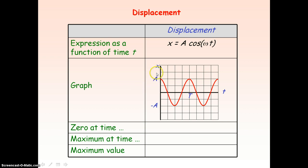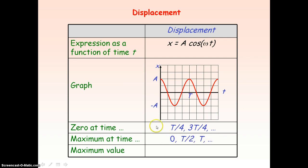If we look at the graph of x against t, it follows the cosine shape with a maximum displacement of a, showing one complete oscillation where the time taken is one whole period T. From the graph, we can see that displacement is zero at one quarter of a period and three quarters of a period. The displacement is maximum at t = 0, half a period, and a whole period, with the maximum value being our amplitude a.